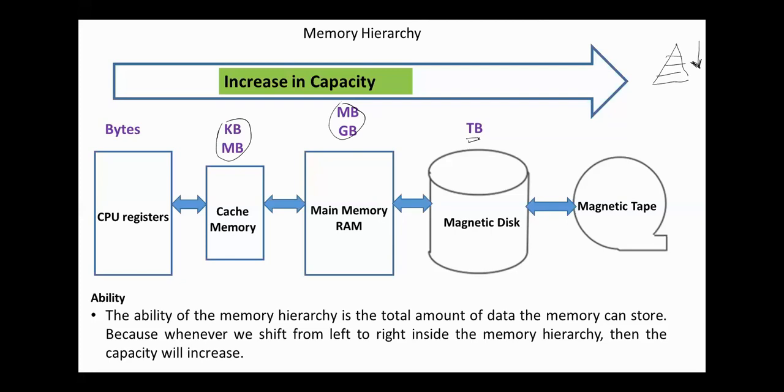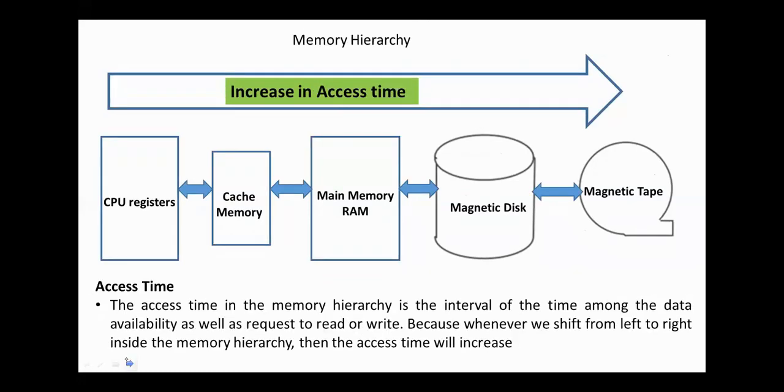The ability of the memory hierarchy is the total amount of data the memory can store. As we move from left to right in this hierarchy or from top to bottom in the pyramid form, the capacity will increase.